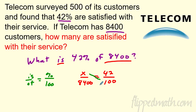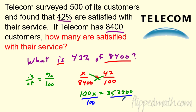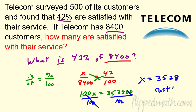Let's solve this. 100 times x gives 100x. And 8,400 times 42 — I actually calculated this beforehand — is 352,800. We're going to divide both sides by 100. Those zeros cancel, so x equals 3,528 customers. Make sure you label this. So you could have found the sample, but really we're interested in the population — 42% of that.